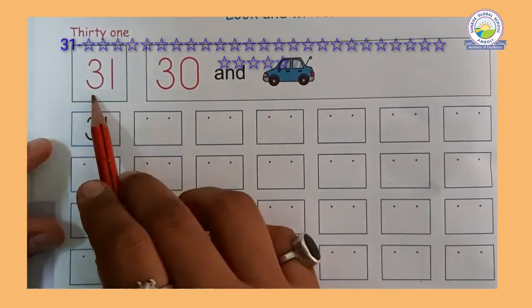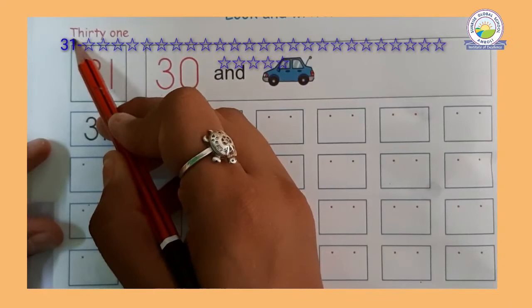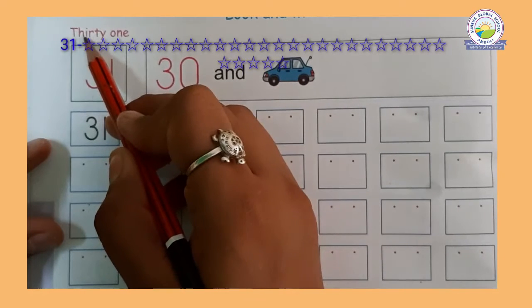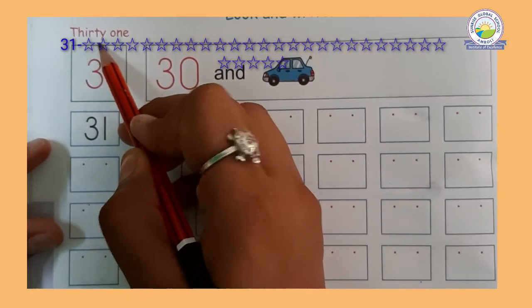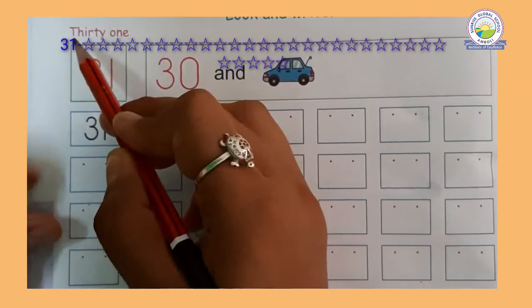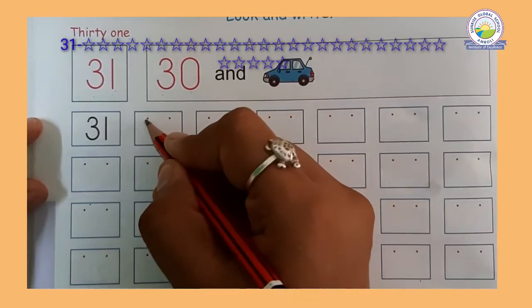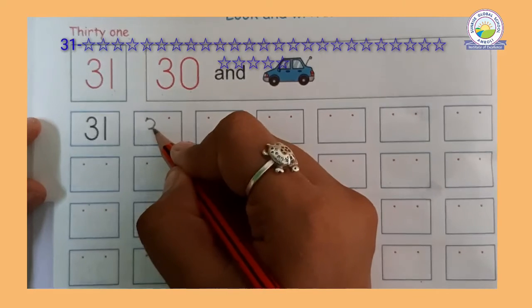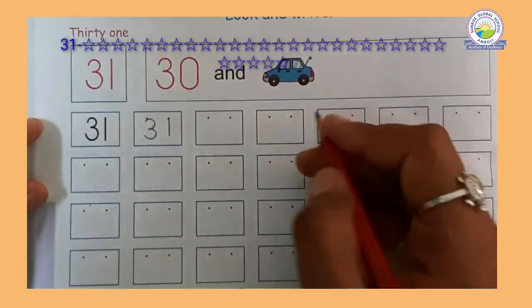So 3 and 1, 31. Now let's read the spelling. T-H-I-R-T-Y, 30. O-N-E, 1, 31. Right? Now let's write. Half circle, again half circle. Standing line. 31.